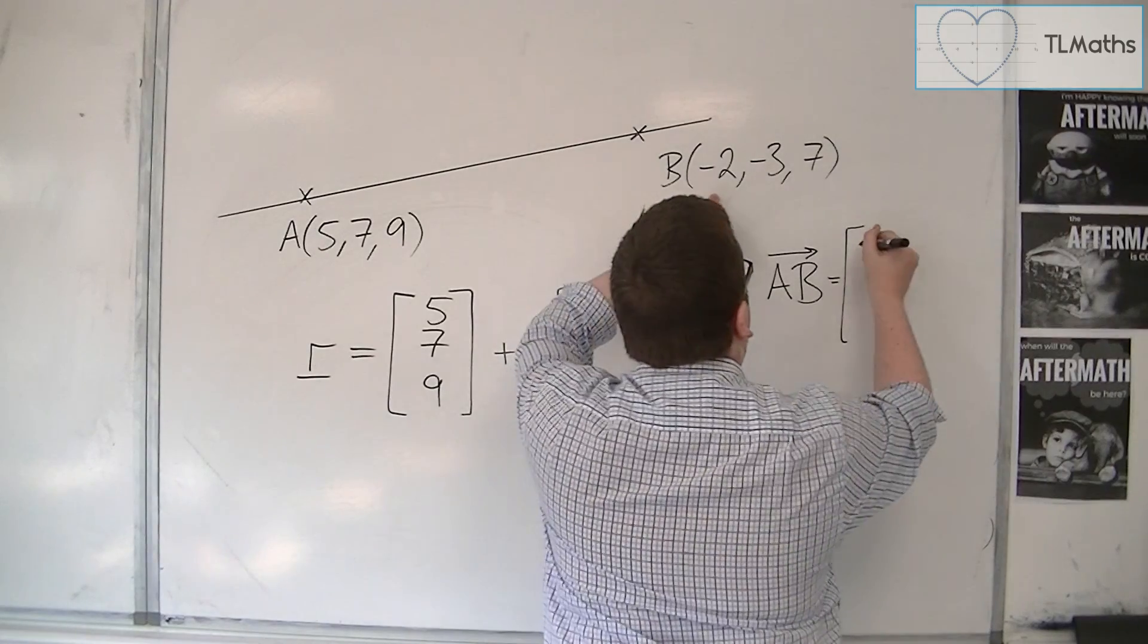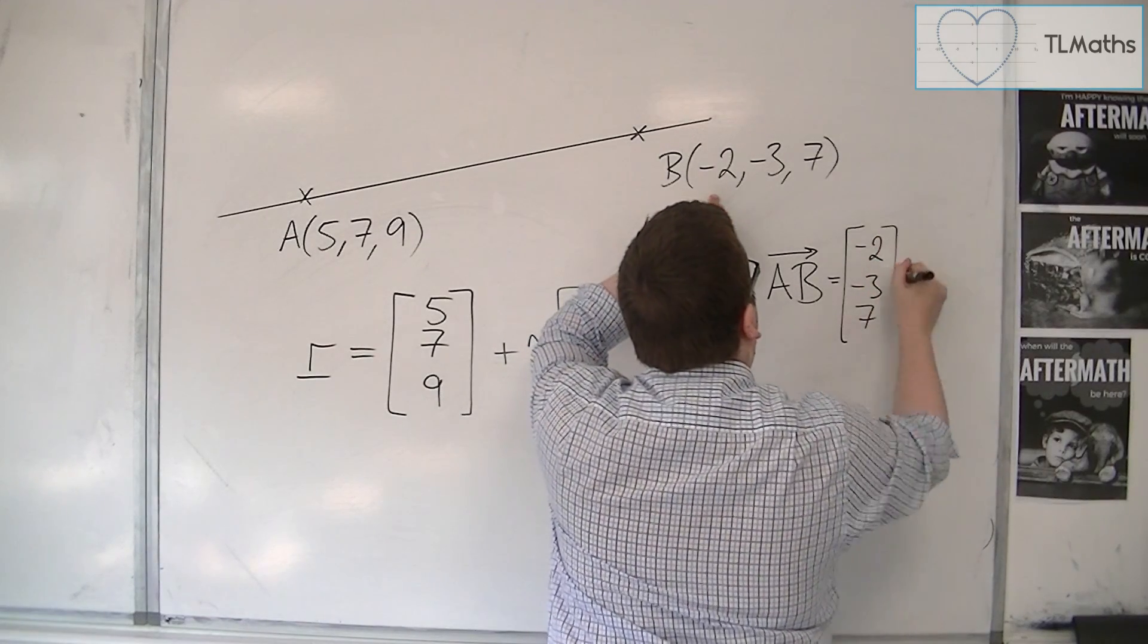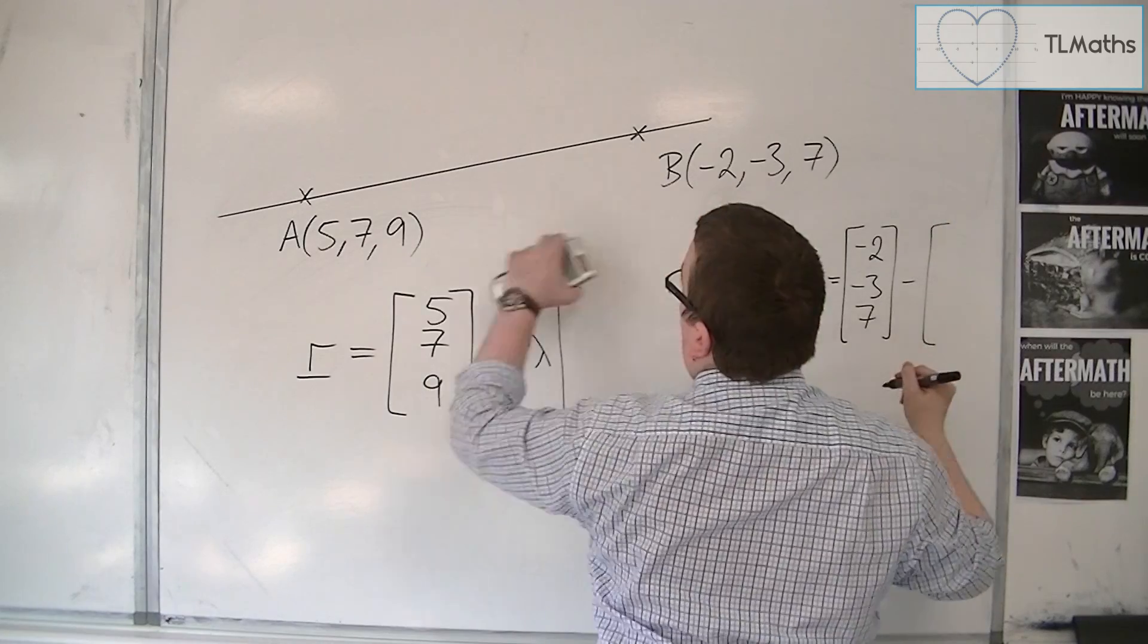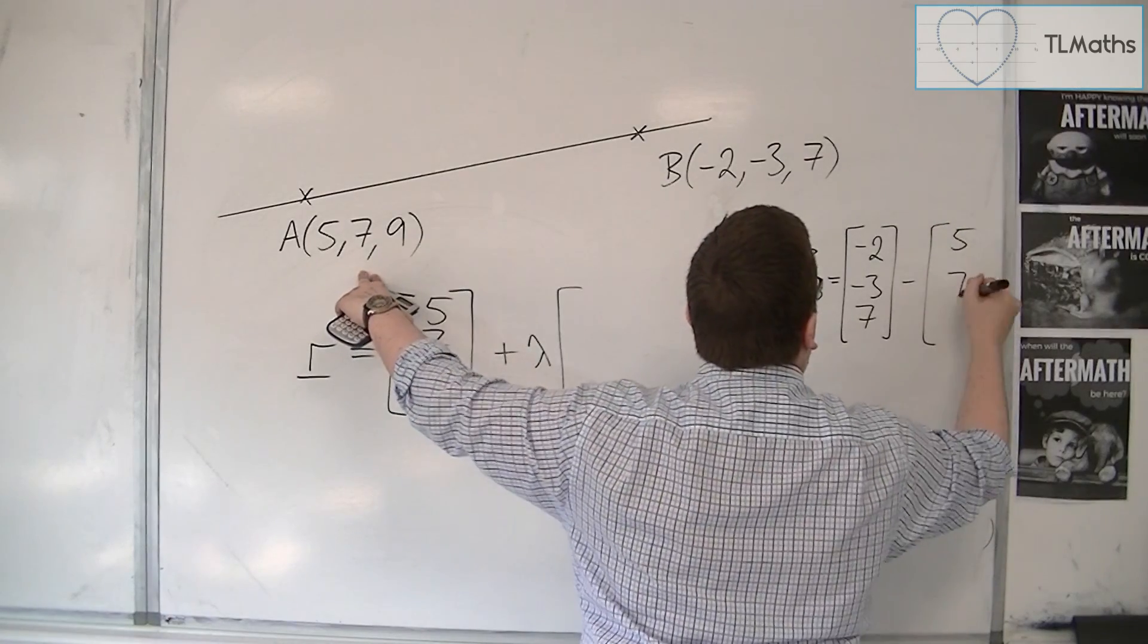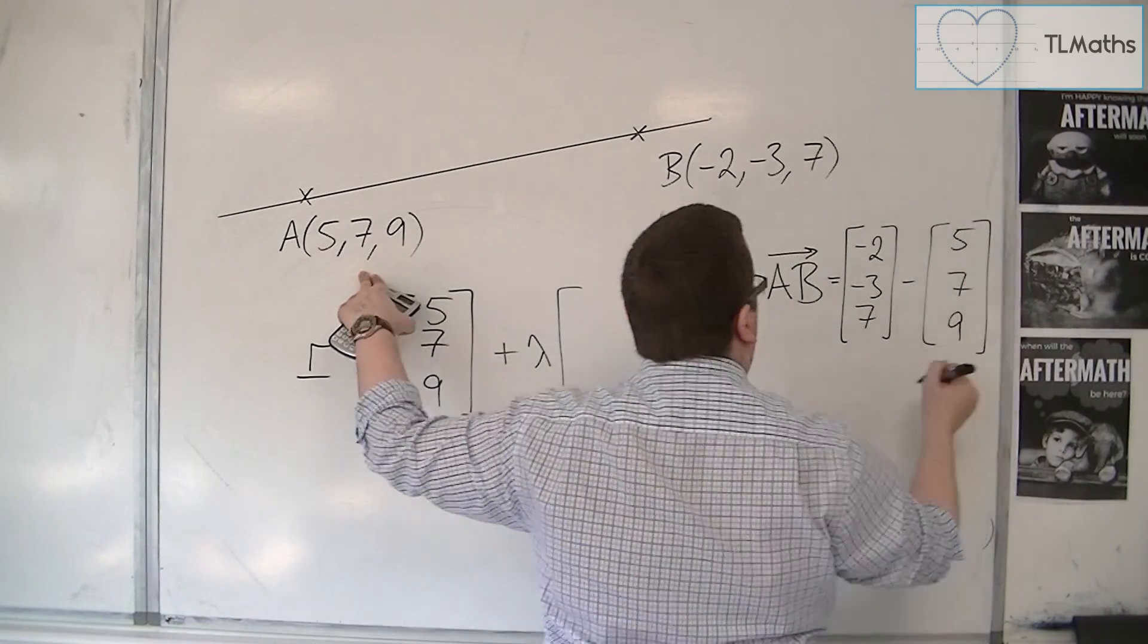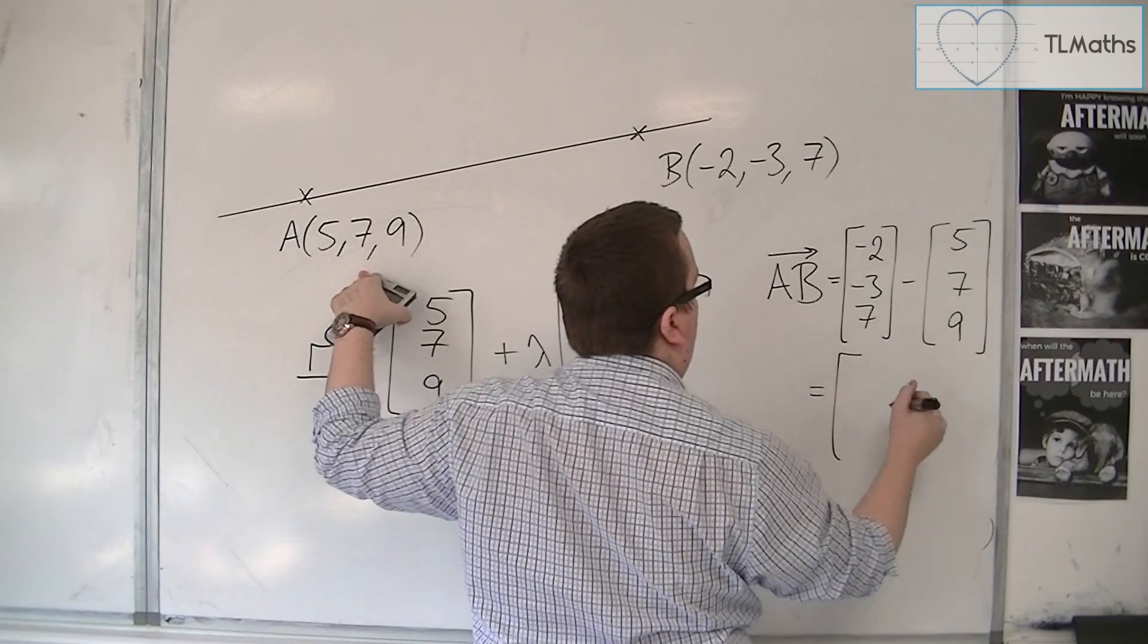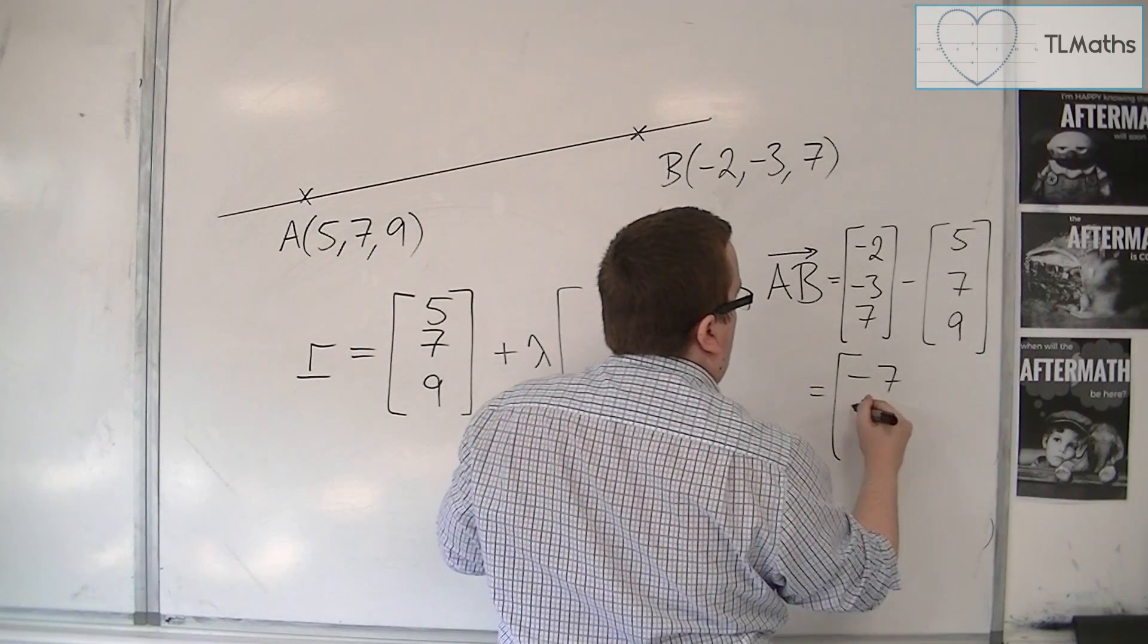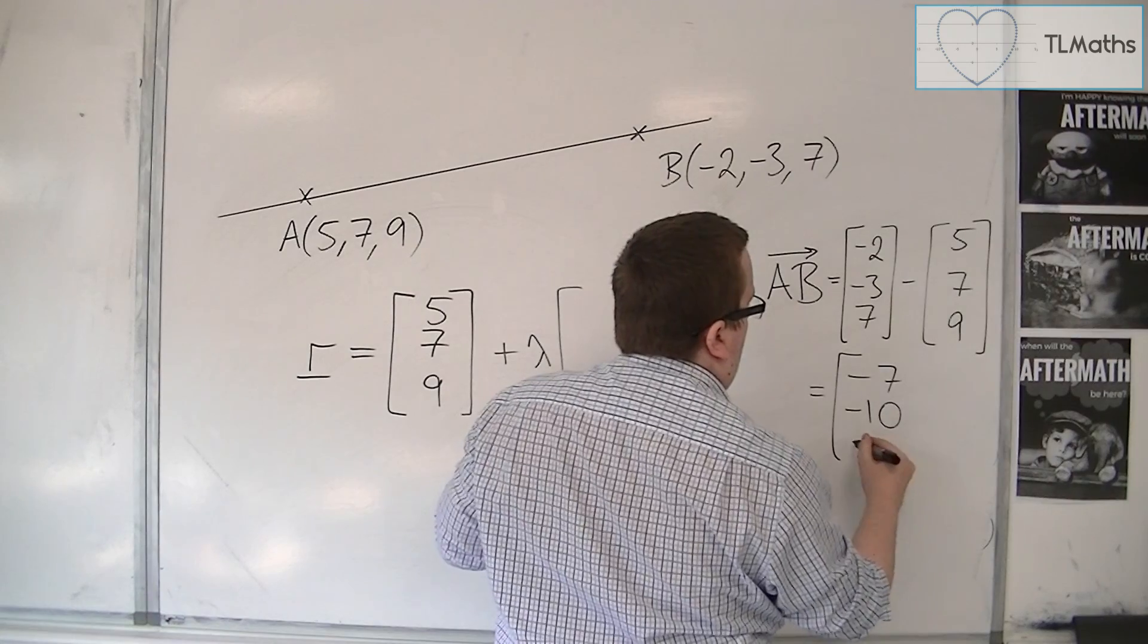So -2, -3, 7, take away 5, 7, 9. So we actually have -7, -10, and -2.